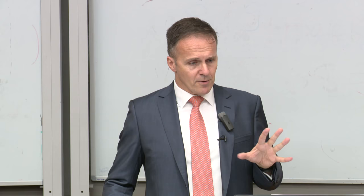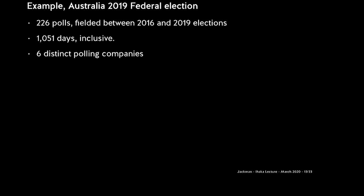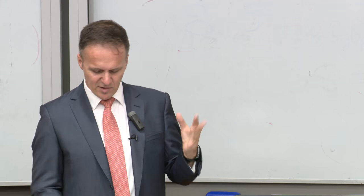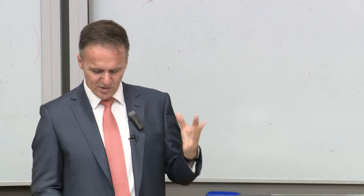Here's an example: the last Australian federal election. 226 polls over 1,051 days between the 2016 and 2019 elections, fielded by six distinct pollsters. I augment the model with a discontinuity when Scott Morrison replaced Malcolm Turnbull as PM — a jump day of unknown magnitude. I estimate this separately for different vote-share targets. One pollster — Ipsos — gave us a ton of data; you can see the imbalance, with YouGov contributing 12 polls.